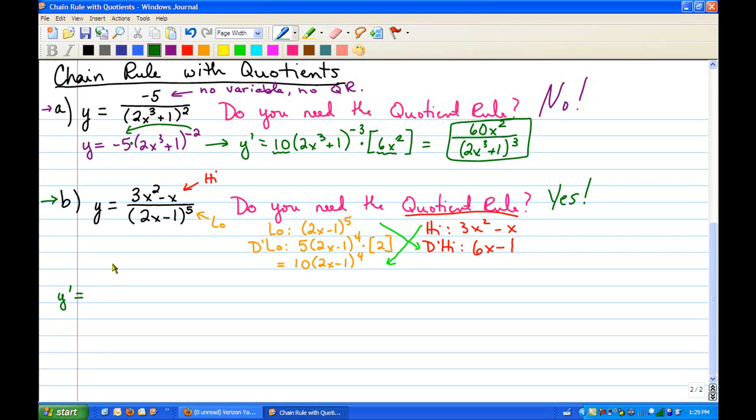So we've got low times d high minus, for the quotient rule, high, and make sure you put all these in parentheses if they have more than one term. So high times d low, and then put the entire thing over low squared.